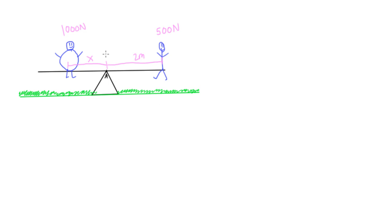Let's look at this simple moment problem. We have a teeter-totter with two people sitting on it. The big person weighs a thousand newtons and the small person is 500 newtons. They're sitting two meters away from the middle, and the question is how far away does the big person have to sit?